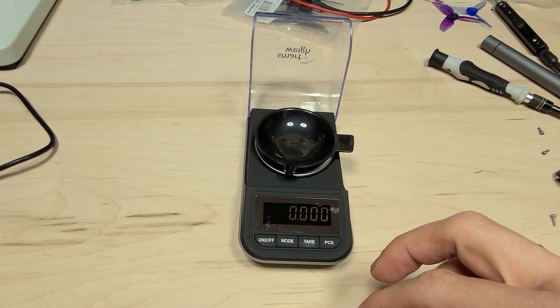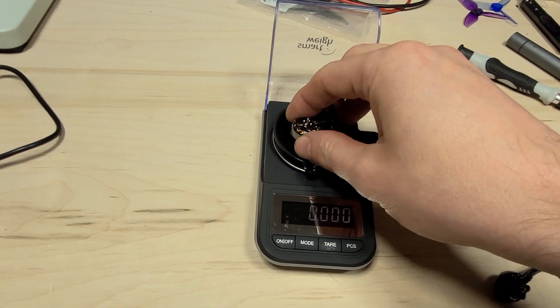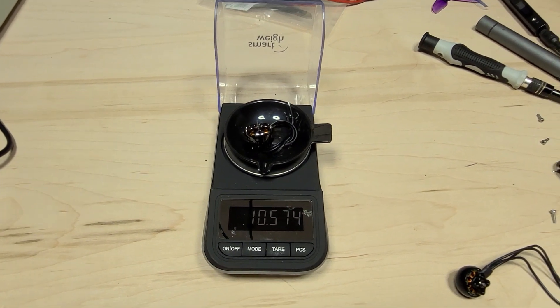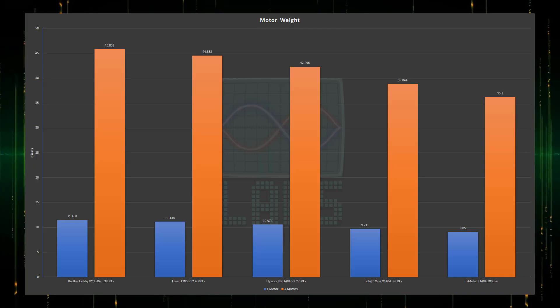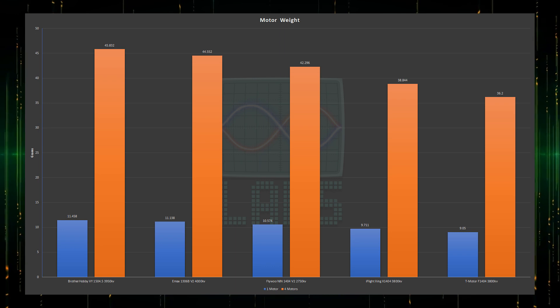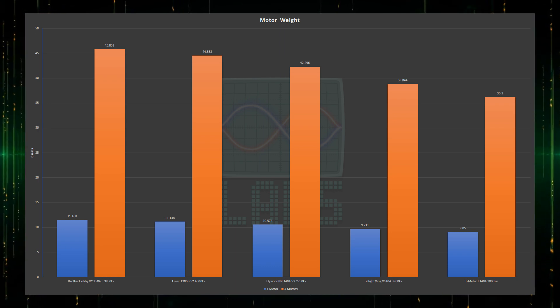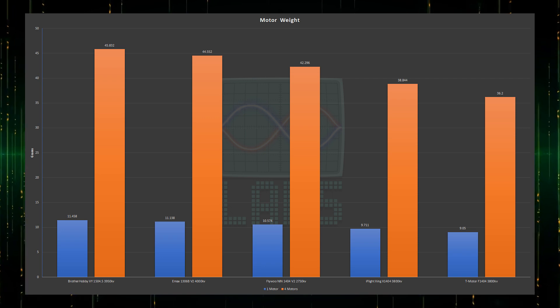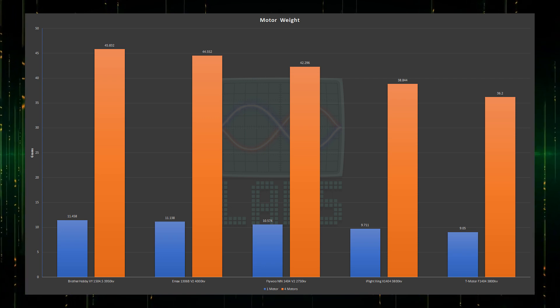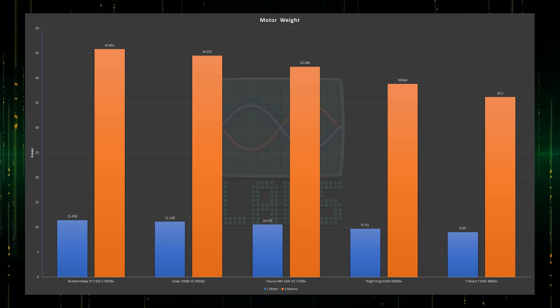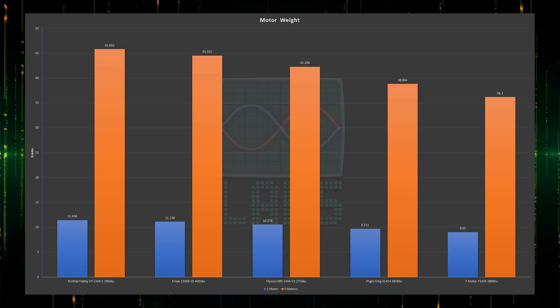Now for the weigh-in. I weighed these motors using my calibrated scale, accurate to 0.01 grams. The motor wires have all been cut to the exact same length. The heaviest motors are no surprise, with the Brother Hobby and EMAX coming in at 45.8 and 44.5 grams per quadcopter. What is surprising is the weight variance in the 1404 motors, with the Flywoo coming in at 42.3 grams, only 3.5 grams less than the Brother Hobby 1504.5.